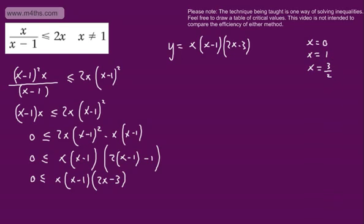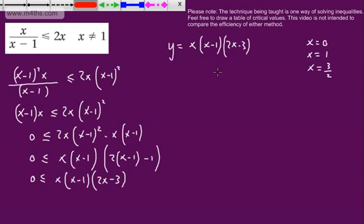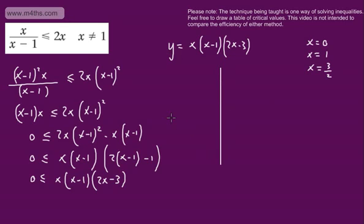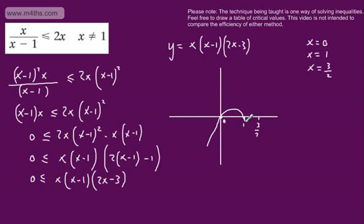Sketching this up, we now have a cubic graph and we should know the shape of this cubic graph — we know it's positive. We're going to have a point of intersection at 0, one at 1, and one at 3 over 2. So when we draw this, we're going to come up, come round, and then come up and out that way.